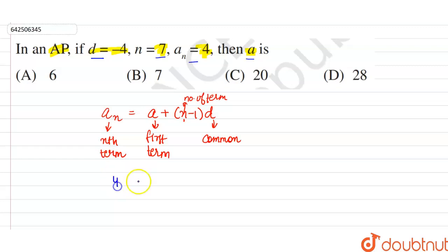An is 4, so 4 is equal to A, A as it is, plus N minus 1 means 7 minus 1 into D into minus 4.